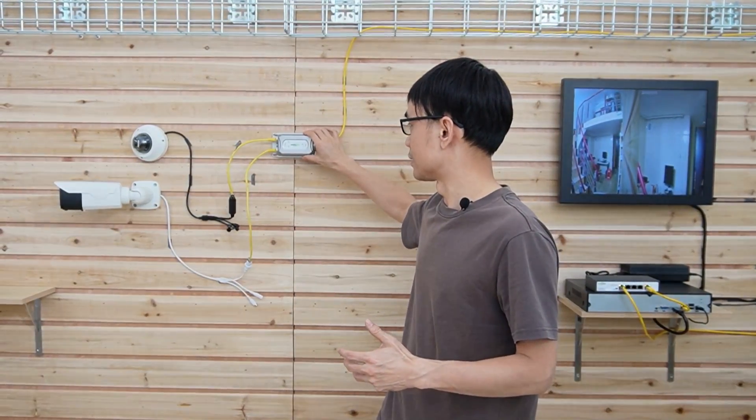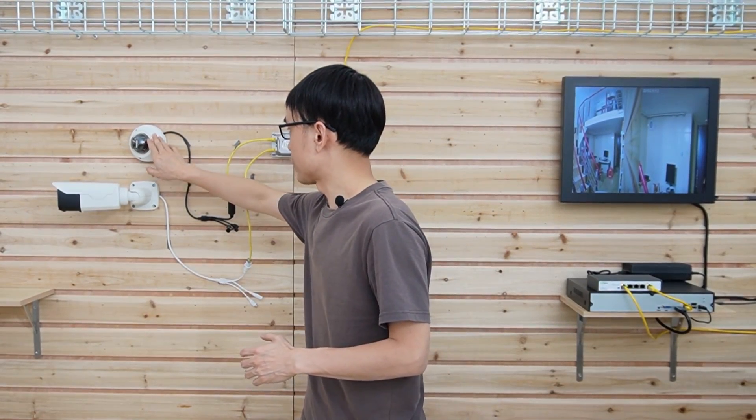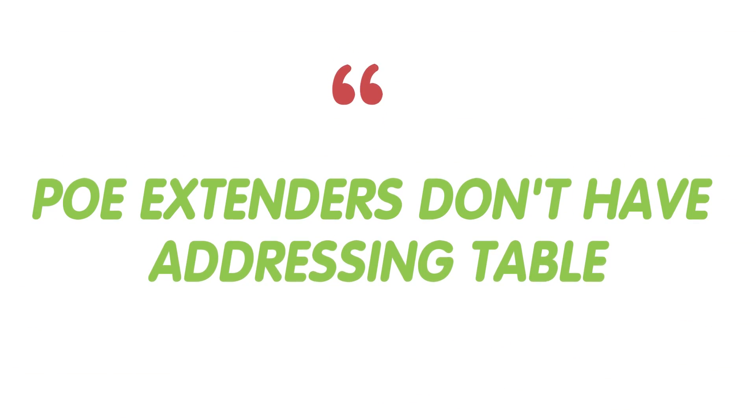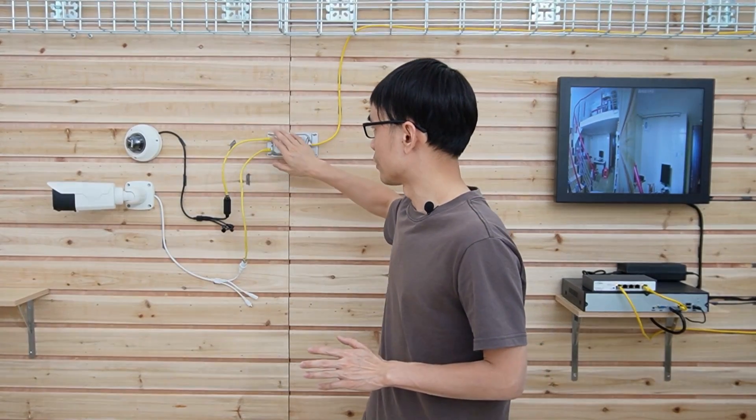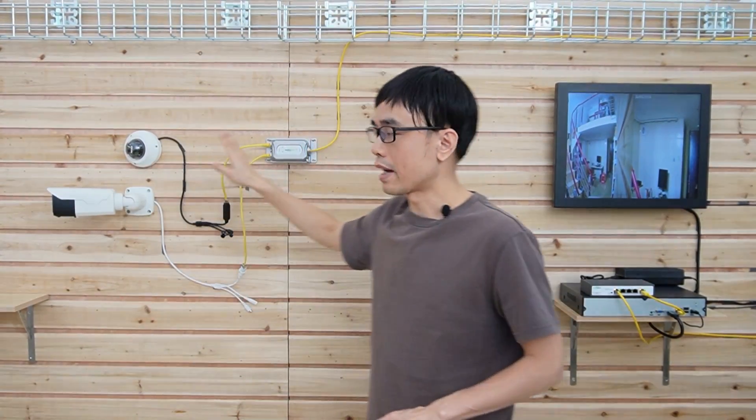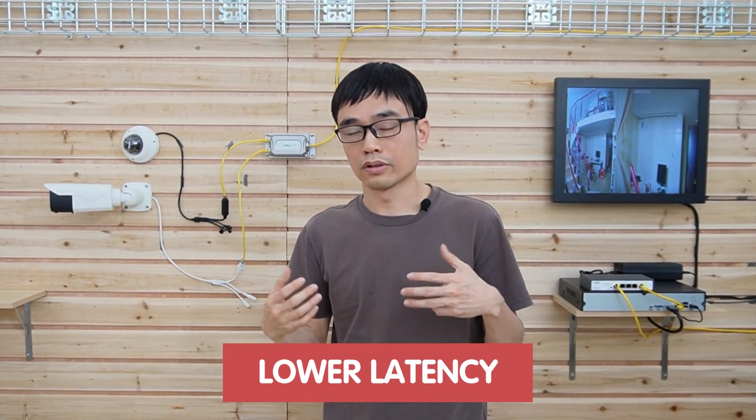Now let's talk about the difference between the PoE extender and the PoE switch. Actually, it's not really a switch — you can consider it a hub, because in a standard PoE switch there is an addressing table. Before a data packet is forwarded to the next port, it must look up the addressing table. But the PoE extender doesn't have any addressing table. Once it receives the data packet from the cameras, it passes it to the input and sends it to the PoE switch immediately. So the latency will be lower than the PoE switch.